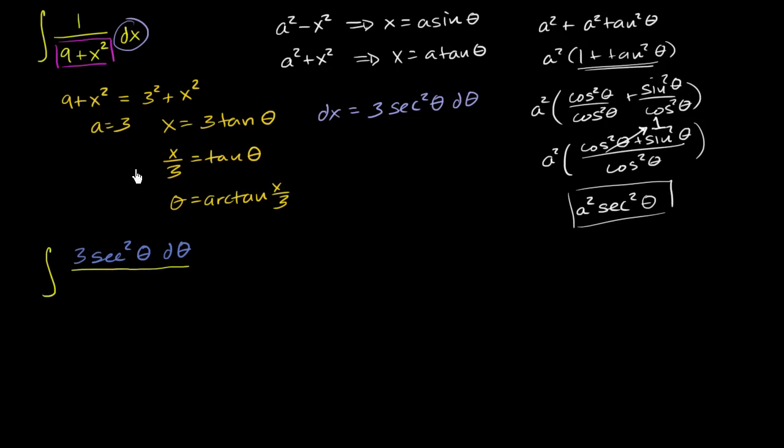Now we already know what that's going to simplify to. Our a squared plus our x squared is going to, since we made this substitution, x equals 3 tangent theta, x equals 3 tangent theta is going to simplify to a squared secant squared theta. So this is going to simplify to 9 secant squared theta.